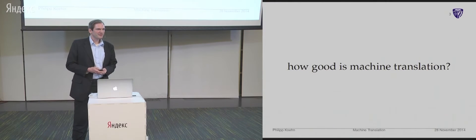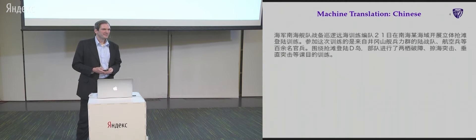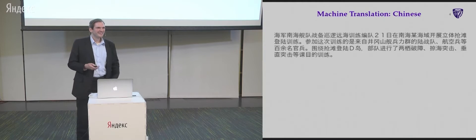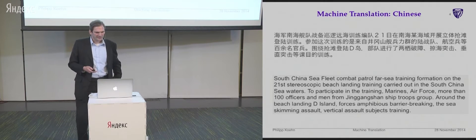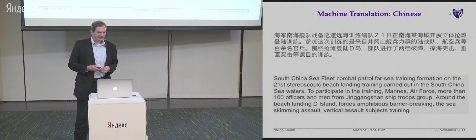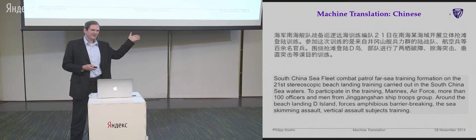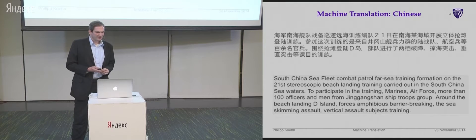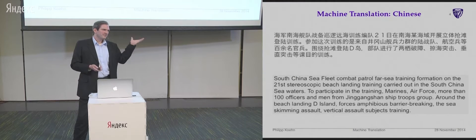The first question you probably have is: how good is machine translation? So I'll give you a few examples. The first one is Chinese. If you run this through a machine translation system you get: 'South China Sea Fleet Combat Patrol Far Sea Training Formation on the 21st stereoscopic beach landing training carried out in the South China Sea waters to participate in the training Marines Air Force. More than 100 officers and men from Jing Wenzhen Ship Troops Group.' It's not great, but you know more than you knew before — you know this is an article about a training exercise of the Chinese military in the South China Sea. I have no idea what a 21st stereoscopic beach is, but it sounds exciting.